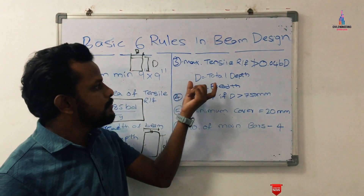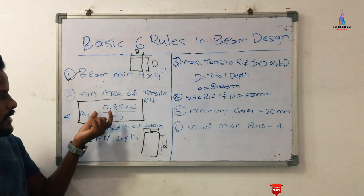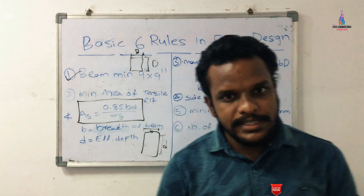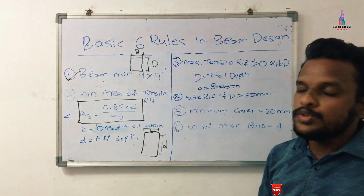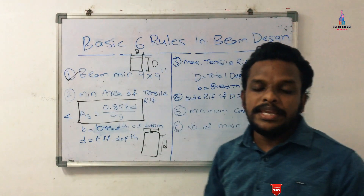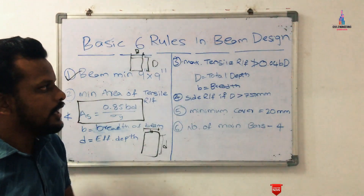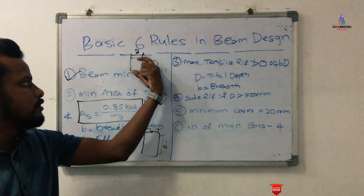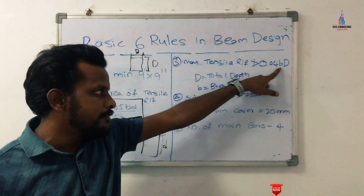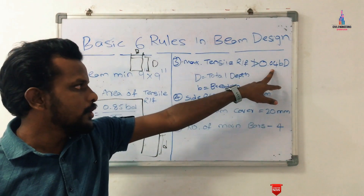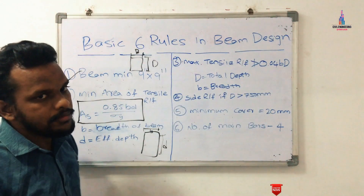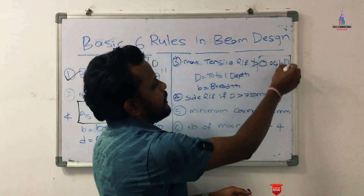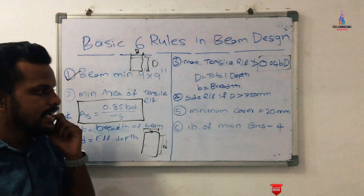The third rule: maximum tensile reinforcement should not exceed 0.04 × b × D, where D is the total depth of the beam (not the effective depth), and b is the width of the beam. Whatever reinforcement value is calculated for the beam must not exceed this factor.